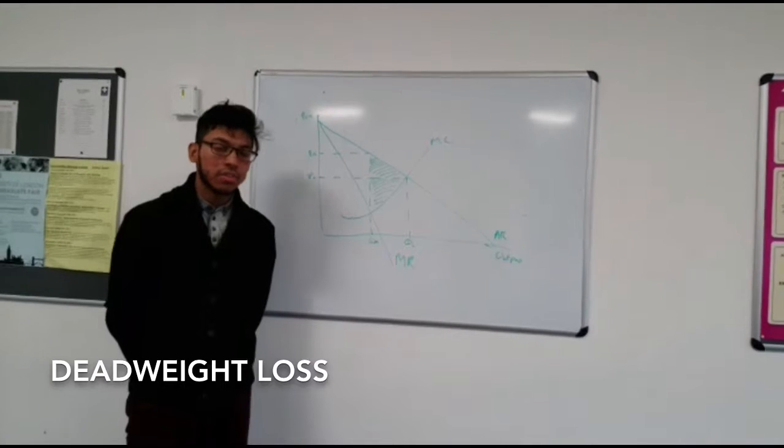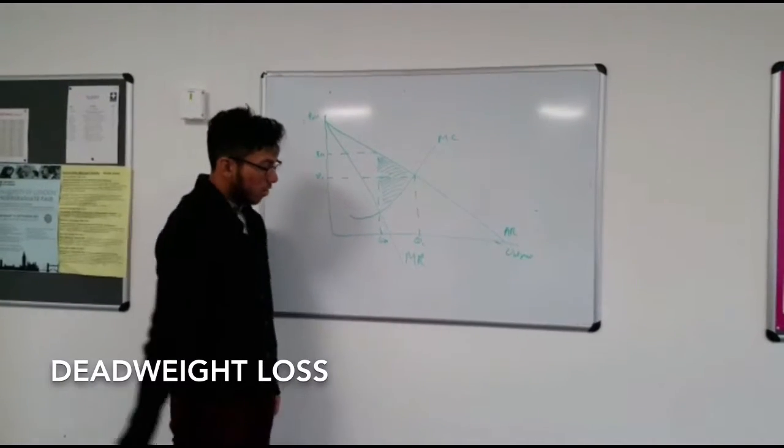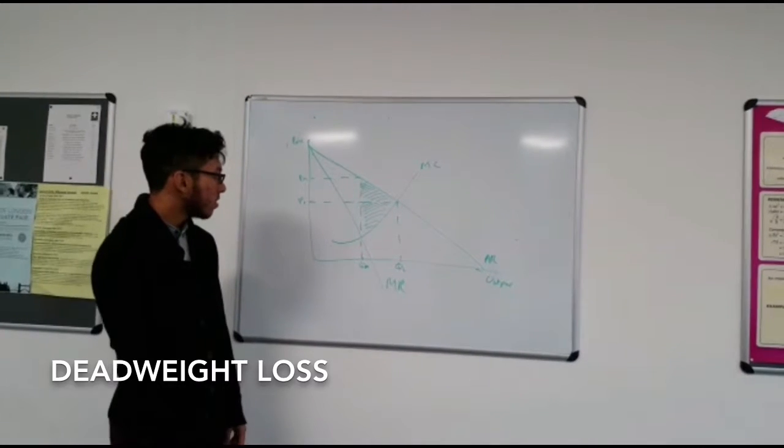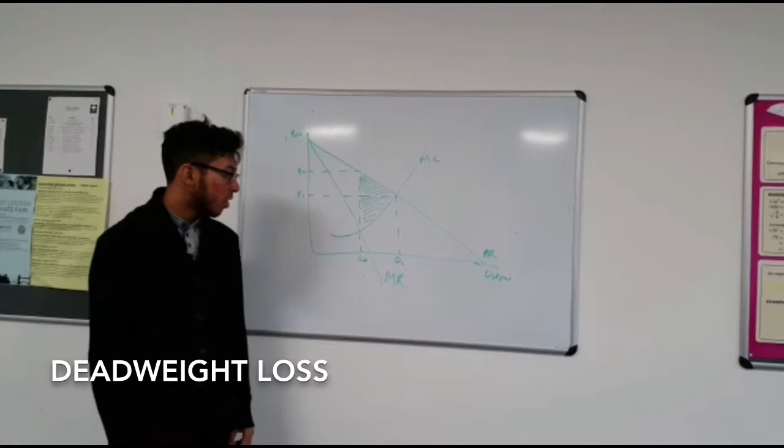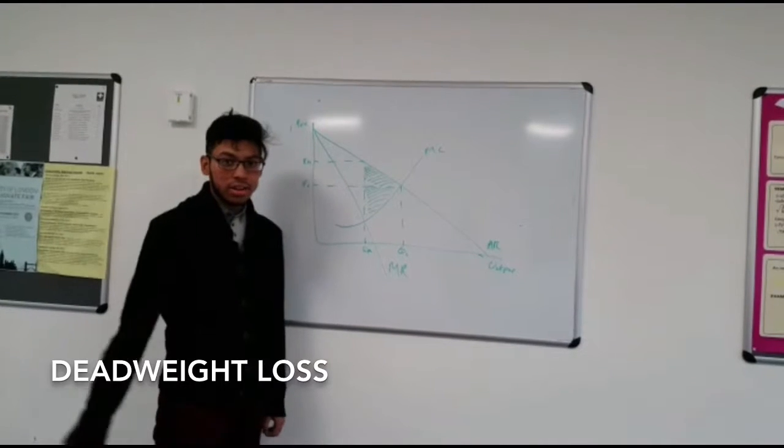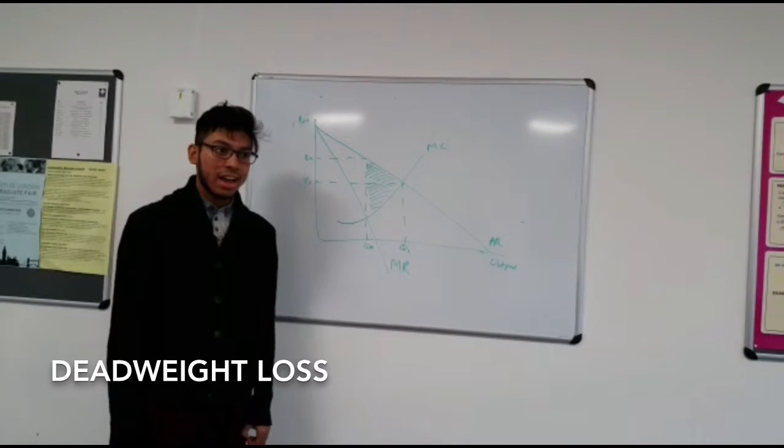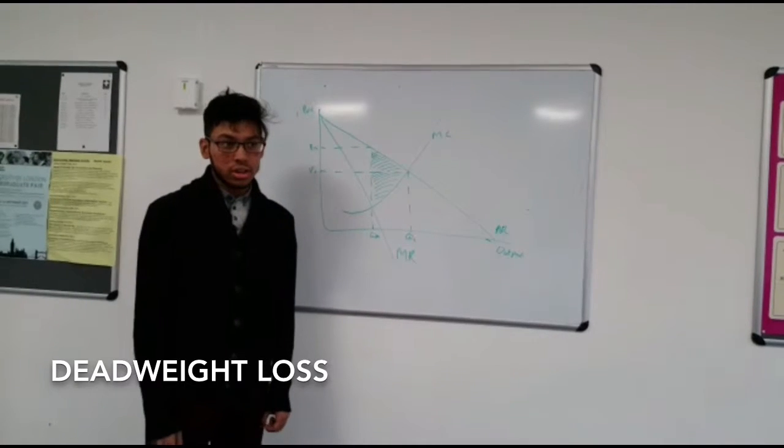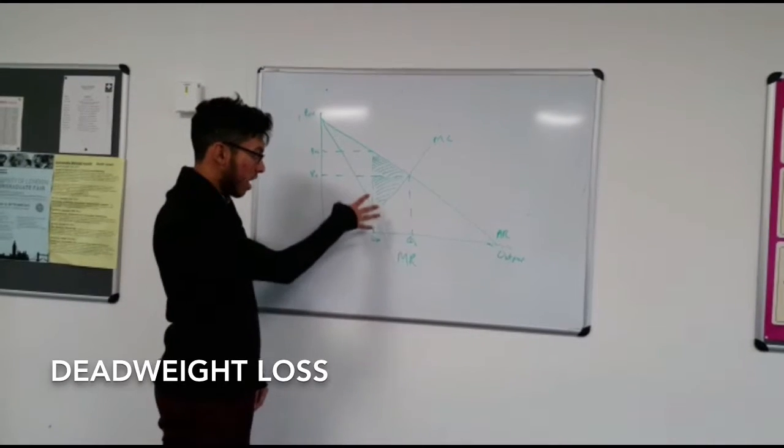A disadvantage of monopoly is that it results in deadweight losses. This occurs because they restrict output at QM rather than producing at QC which would occur in perfect competition. This results in them charging high prices at PM rather than PC. This is because they are profit maximizers, producing at MC equals MR rather than at AR equals MC. Hence they are allocatively inefficient. This allows them to make abnormal profits at the expense of consumer surplus, and there is loss to society which is evident with the shaded area.